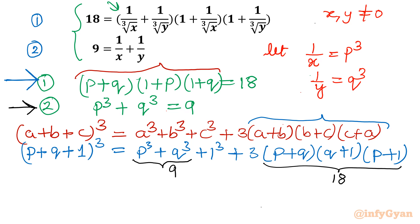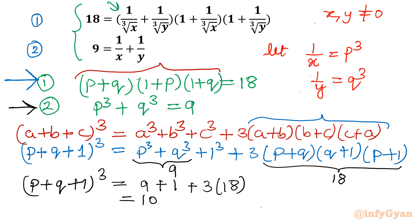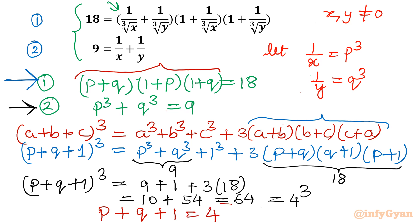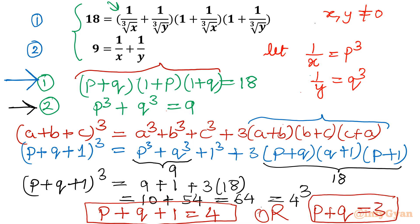From this we can conclude: (p + q + 1)³ = 9 + 1, that is 10, plus 3 times 18. So it becomes 10 plus 54, which equals 64. And 64 is 4 cubed. So our strong conclusion is p + q + 1 = 4, which gives p + q = 3. Our system is now in its simplest form: equation 1 is p + q = 3, and equation 2 is p³ + q³ = 9.